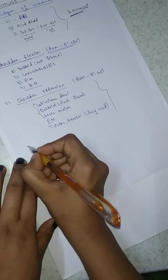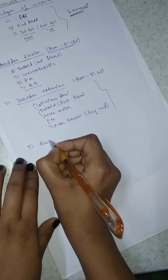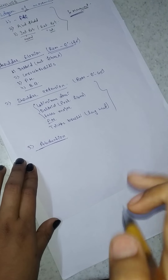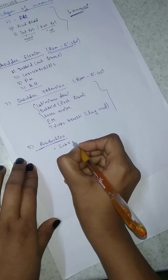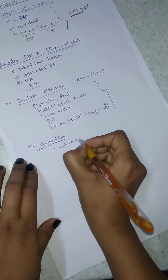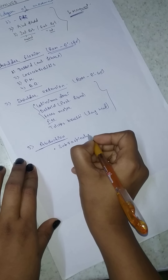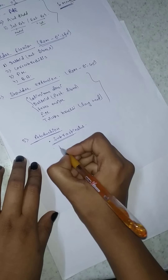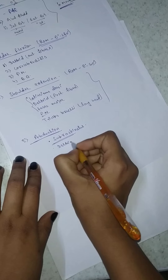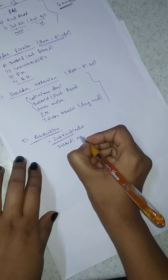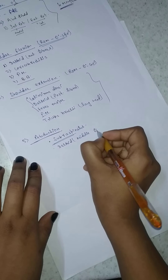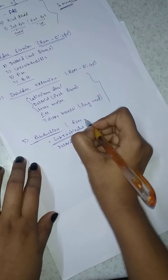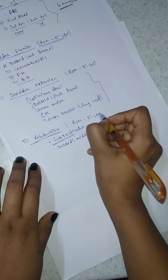The third movement is abduction. Two muscles help with abduction: the first is supraspinatus — which is one of the rotator cuff muscles — and the second is the deltoid middle fiber. The range of motion for abduction is 0 degrees to 180 degrees.